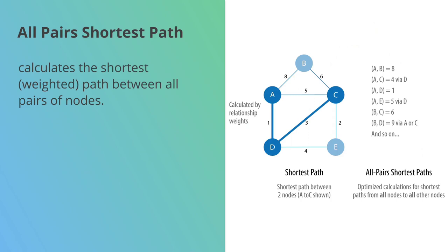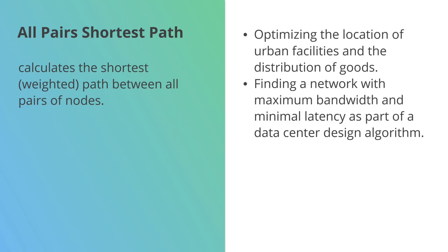This one's obviously not the type of query or algorithm that you're going to be running in a real-time situation because it's got to do a lot of computation. But it can be useful for some use cases like shown on the right-hand side here. If we were trying to optimize the location of some facilities and the distribution of goods, we could use it there, or it's also been used to identify on a network the maximum bandwidth and minimum latency as part of data center design.